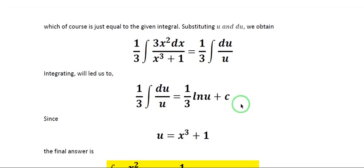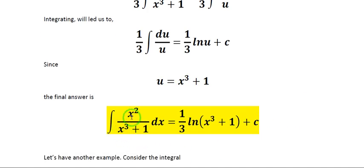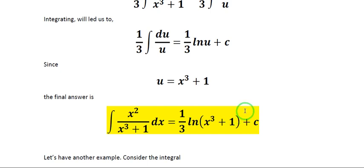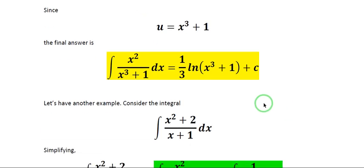Since 3x squared dx is our du and x cubed plus 1 is our u, applying the formula gives 1 over 3 ln of u plus c. Substituting back our u, which is x cubed plus 1, the final answer is: the integral of x squared all over x cubed plus 1 dx is equal to 1 over 3 ln of the quantity x cubed plus 1, plus c. You can also write the absolute value symbol here.